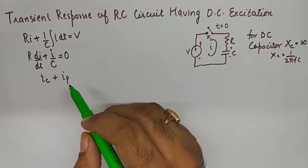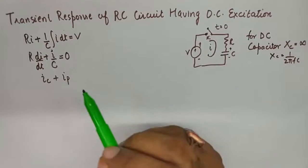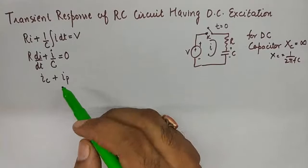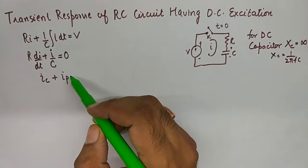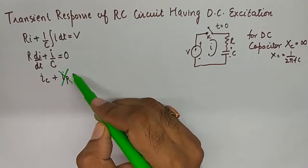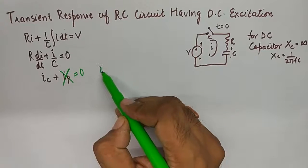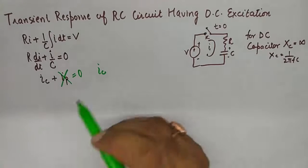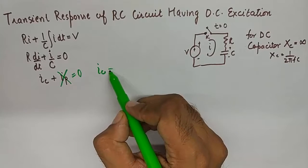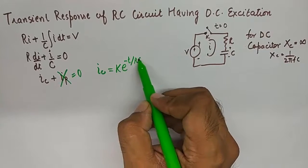The particular solution of that equation came out to be the steady state current which used to be V/R. So here in this case because of the virtue of capacitor in place, this will go away. This will become 0. So what we are left with is ic only. And ic will be equal to Ke^(-t/RC).